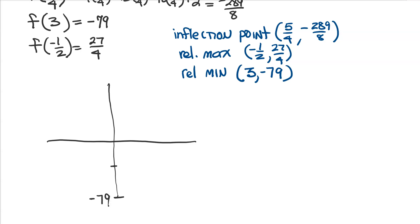We know that we need our y axis to go down at least as low as negative 79. Also in there, we'll have our point at about negative 36, which is really negative 289 over 8, and then the highest y value we have, and again, this is not to scale here, is the 27 over 4, which is really about 6.7.